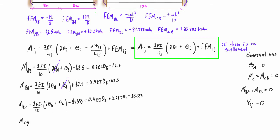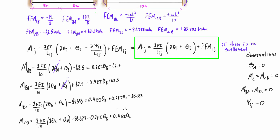For M-CB, we get 2EI over 10, times 2 theta-C plus theta-B, plus the fixed end moment of positive 83.333. There are no theta-A terms to cancel. Distributing and writing theta-B first for convenience, we get M-CB equals 0.2 EI theta-B plus 0.4 EI theta-C plus 83.333 kilonewton-meters.